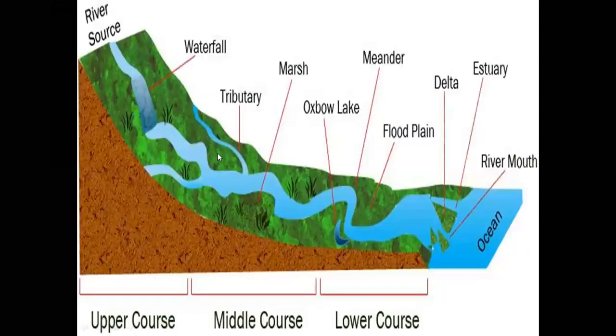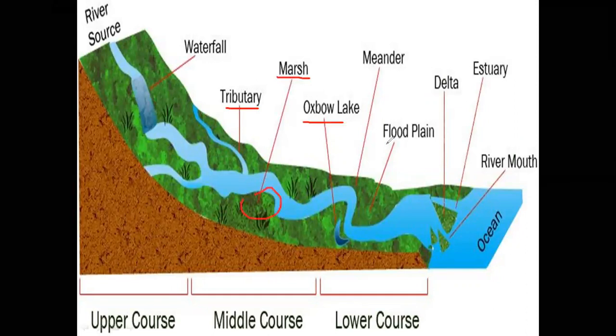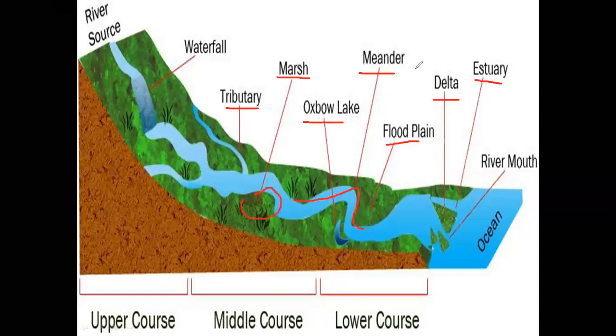There is another diagram showing you different terminology associated with this topic. We have the river source, then the tributary, then marsh which we commonly call dal dal in Hindi, then we have oxbow lakes, flat plains, meandering is the turning which the river encounters, we have the delta, then estuary formation, river mount formation.